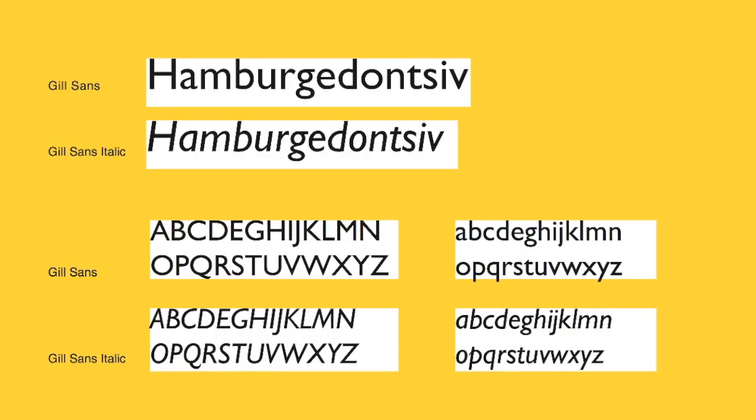I wanted to showcase a sans-serif that does employ a lot of the considerations we've been talking about with serif designs, applied onto a sans-serif. So let's get started. In this case I'm going back to Gill Sans. I've talked about Gill Sans in previous episodes as a humanist sans-serif, and part of the reason you can call Gill Sans a humanist sans-serif is because of how he chose to design its italic.